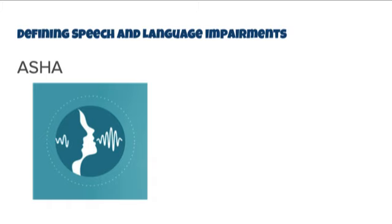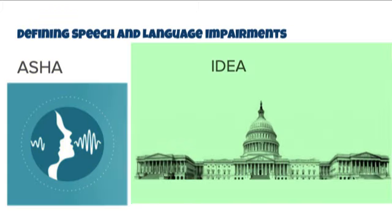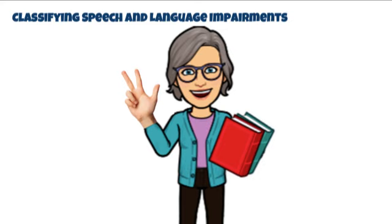When it comes to defining speech and language impairments, we look to two major bodies: the American Speech-Language-Hearing Association (ASHA) and IDEA. ASHA defines a communication disorder as an impairment in the ability to receive, send, process, and comprehend concepts or verbal, nonverbal, and graphic symbol systems, which may be evident in the processes of hearing, language, and/or speech. Under IDEA, students are eligible for special education services if they have a communication disorder — such as stuttering, impaired articulation, a language impairment, or a voice impairment — that adversely affects a child's educational performance.